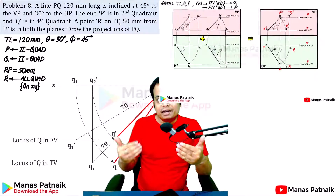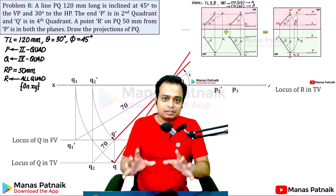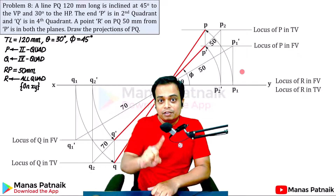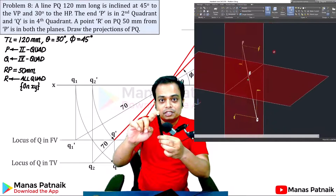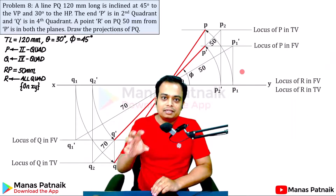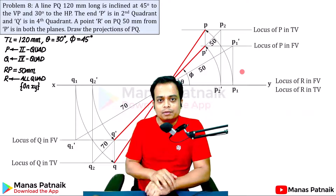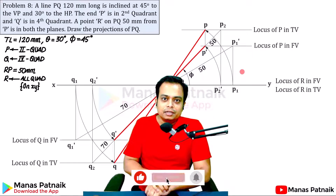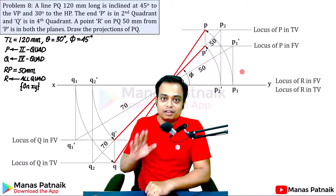There is in fact a standard procedure which you can follow and complete the projections very easily. The problem arises when a line inclined to both HP and VP changes quadrants — that means one end of the line is in the first quadrant while the other is in the third quadrant. This is the case that students find difficult to comprehend as they are unable to visualize the problem, and that's exactly what I wish to address in today's session.